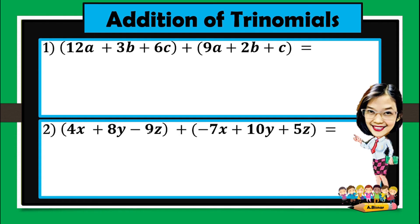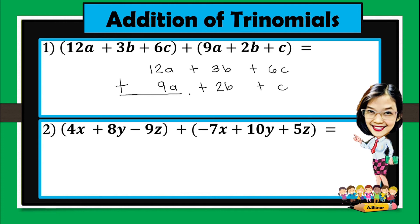Now, let's try to add trinomials. So we have 12a plus 3b plus 6c, then we're going to add it to 9a plus 2b plus c. So 12a plus 9a gives 21a. Plus 3b plus 2b gives 5b. Next, 6c plus c — remember there is an implied 1 — which means we will have 7c. And so the final answer is 21a plus 5b plus 7c.